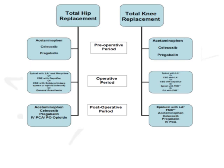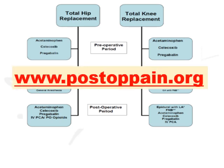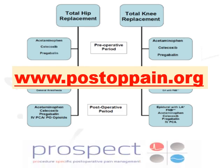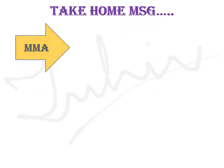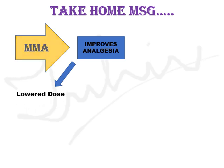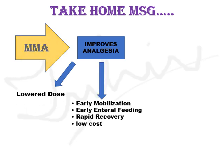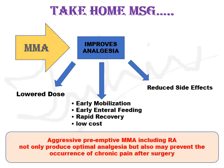These are different multimodal regimens for different surgeries. You can also visit postofpain.org to get ideas about pain management regimens for different surgical procedures. My take-home message: multimodal analgesia improves analgesia, decreases the dose of individual analgesics, helps in early mobilization, early enteral feeding, and rapid recovery. It decreases the cost burden and reduces the side effects of individual drugs. To conclude, aggressive preemptive multimodal analgesia including regional anesthesia not only produces optimal analgesia but also prevents the occurrence of chronic pain after surgery. Thank you.